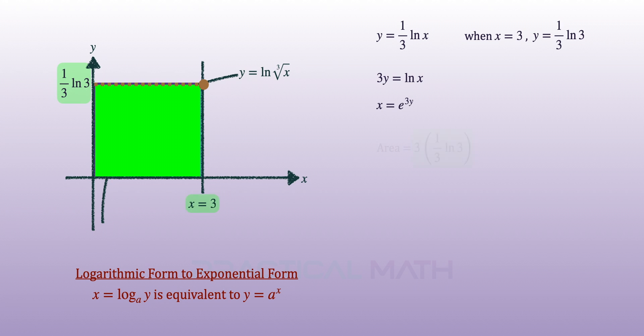Next, we can find the area of the rectangle by taking the height of one-third ln 3 and multiply it to the length of 3. The purple area can then be found by integrating e to the power of 3y with respect to y from y equals to 0 and y equals to one-third ln 3.